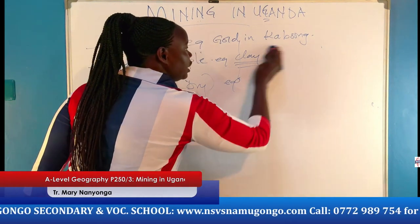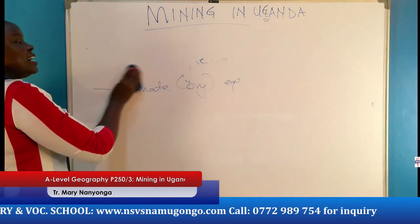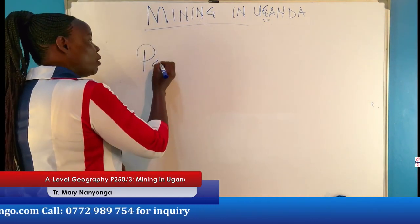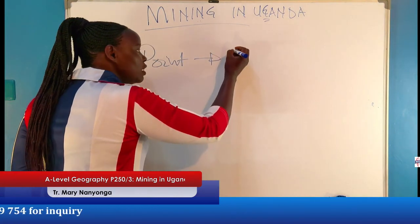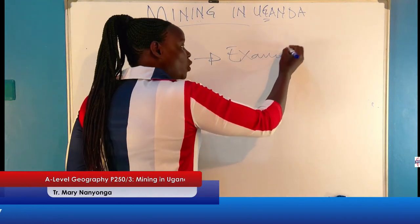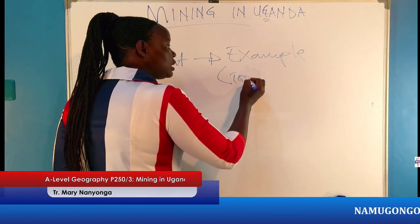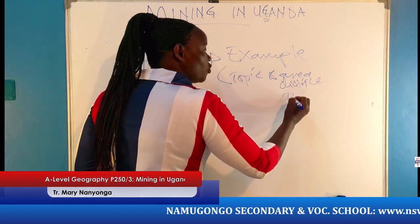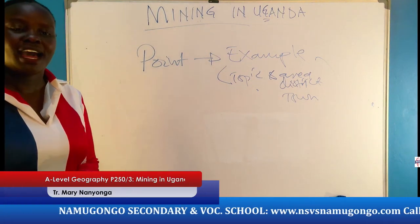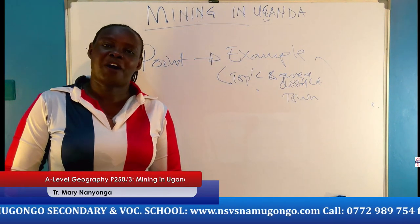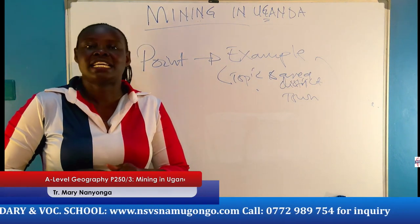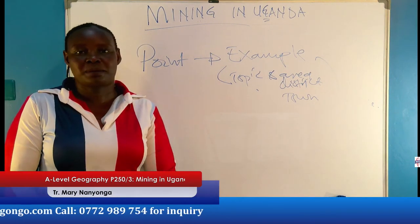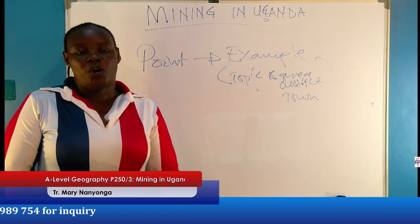That is how our lesson ends today. My dear candidate watching out there — in geography paper 3, you bring out the point and this point should have an example. The example is always the topic — the mineral — and the area, district, or town where that topic is being carried out. Thank you for watching. I hope it is a positive lesson. My name is Nanyonga Mary, and I teach at Nangongo Secondary and Vocational School. Subscribe to NSBS — nangongo.com.